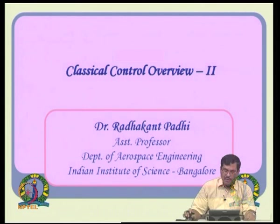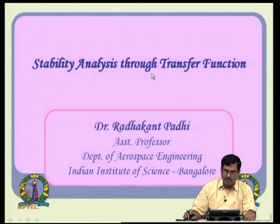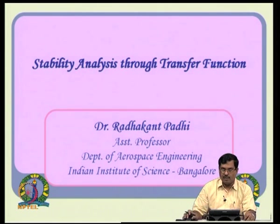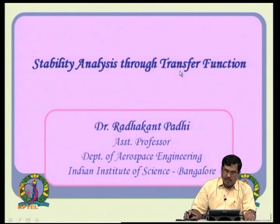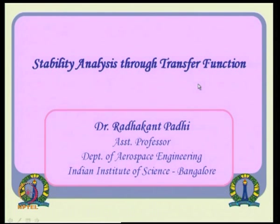Before we studied Laplace transform and its implications, and then we studied time domain analysis for first and second order systems — the effect of poles, zeros, and all things. In this lecture, we will primarily see some stability behavior of linear systems, and whether we can analyze stability through transfer function. We will also study steady state error characteristics of linear systems. We are still in the classical control overview; after we are done, we will go to modern control. So, first is stability analysis through transfer function.